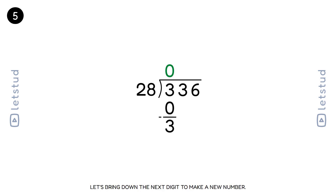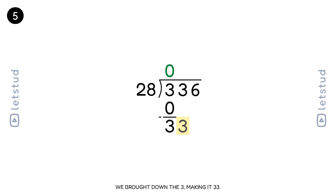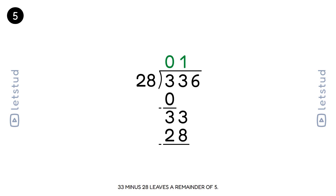Let's bring down the next digit to make a new number. Now we have 33. How many times does 28 fit into 33? It fits one time. We brought down the 3, making it 33. 28 fits into 33 one time. 1 times 28 is 28. 33 minus 28 leaves a remainder of 5.